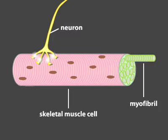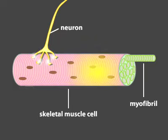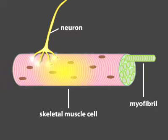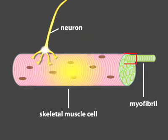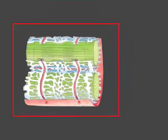When a neuron stimulates a muscle cell, an action potential sweeps over the plasma membrane of the muscle cell. The action potential releases internal stores of calcium that flow through the muscle cell and trigger a contraction.